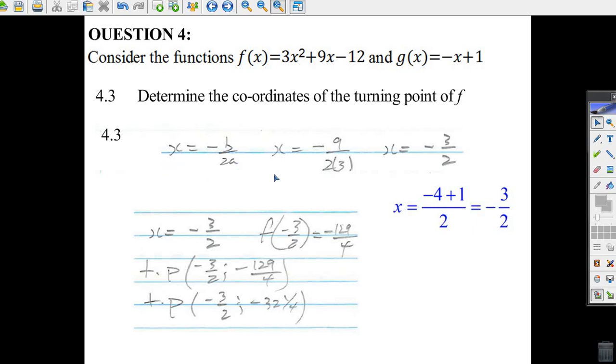So let's do that. We go minus 9 over 2 times 3. 9 divided by 6 is 3 over 2. That's the x-coordinate of the turning point: minus 3 halves.